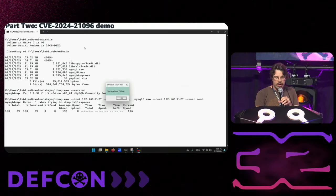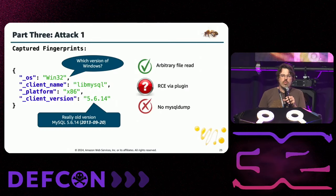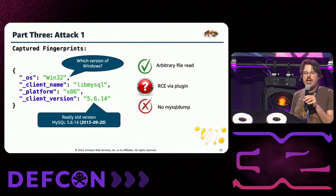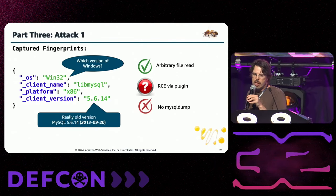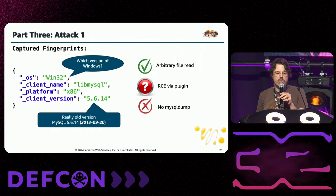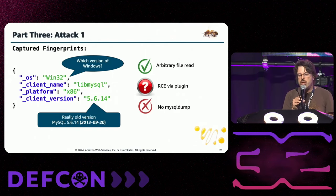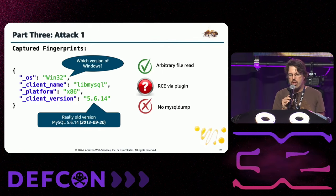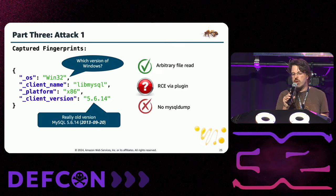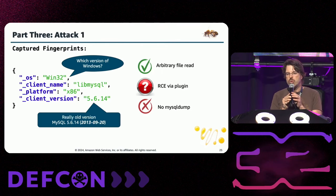Thank you. So now we successfully pwned the client. Back to the two attacks we've been working with. For the first attack, from the fingerprint we can already see what we can or cannot do. Arbitrary file read will work — we know this is an old version. Remote code execution with a plugin, we're not sure — we'll try it. And there is no MySQL dump in this particular attack, so we cannot use the newest CVE.